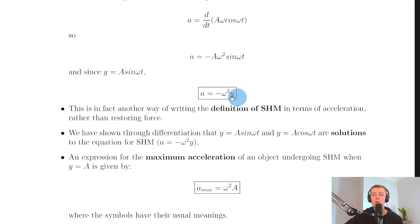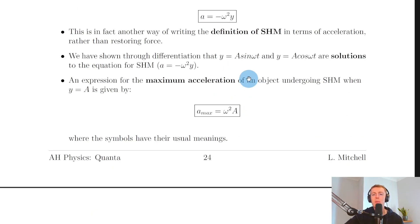So we've got the general acceleration equation a equals minus omega squared y, but we can also write one in terms of the maximum acceleration. An expression for the maximum acceleration of an object undergoing SHM when y equals a is given by a max equals omega squared a.